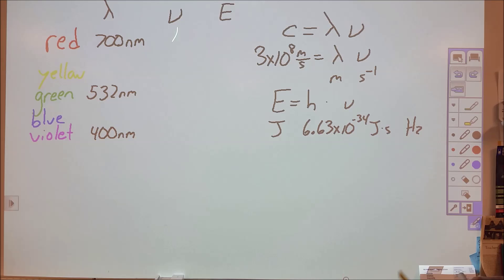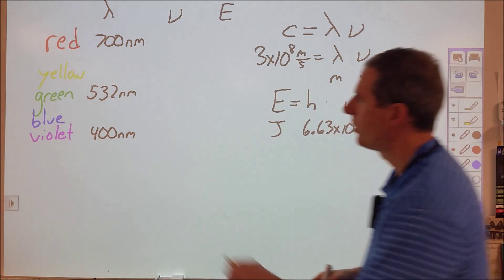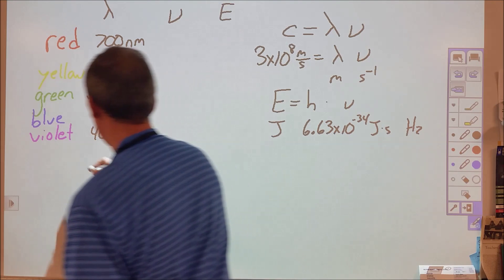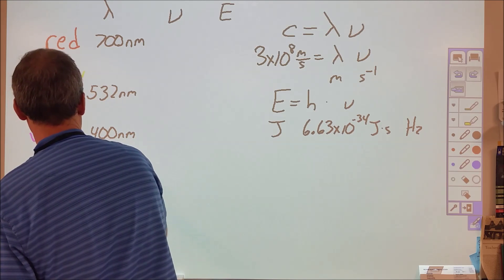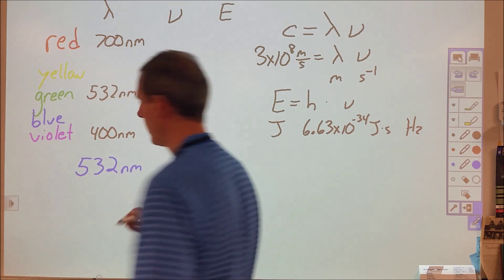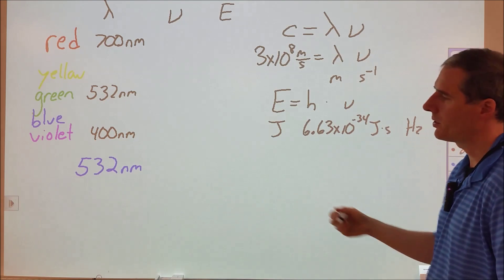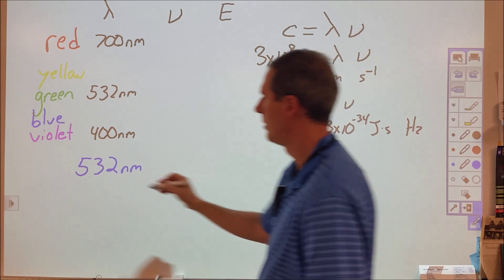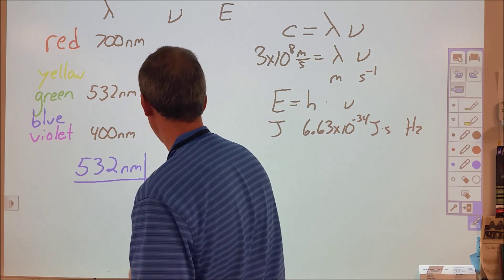In cases where we're given some information about particular kinds of light, we can compare how the wavelengths and frequencies will come out. For example, here we're told that green light is 532 nanometers. So 532 nanometers, to change that into meters, a nanometer is a billionth of a meter.